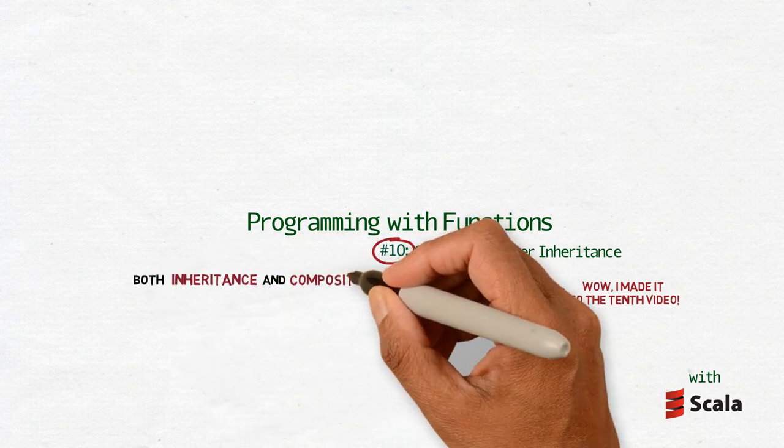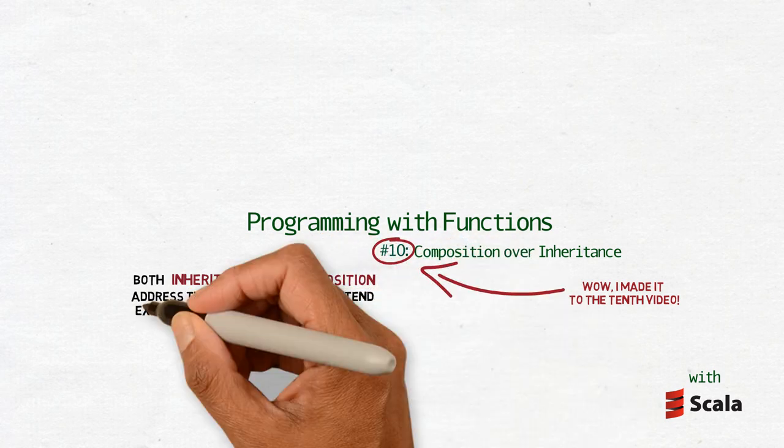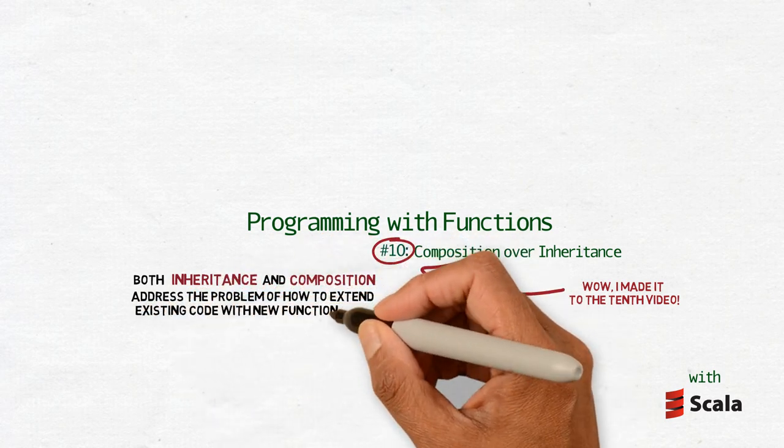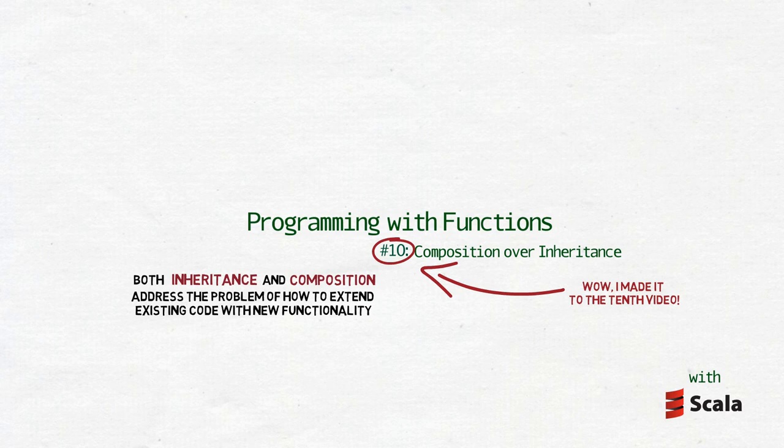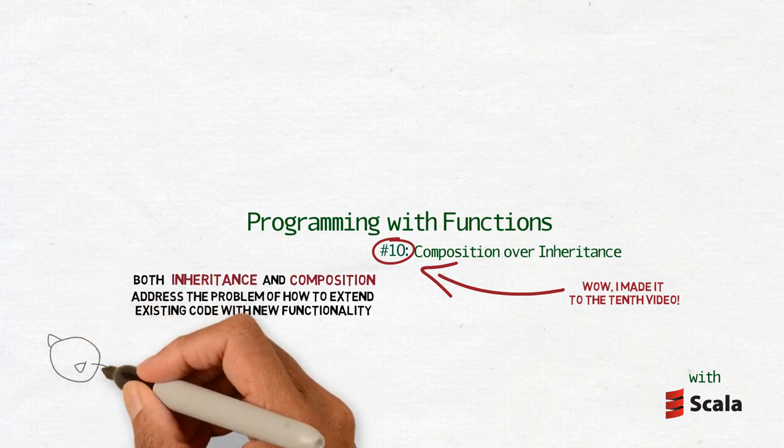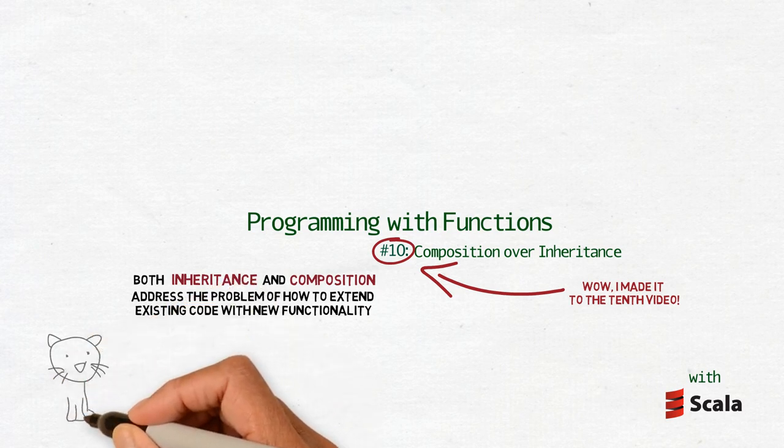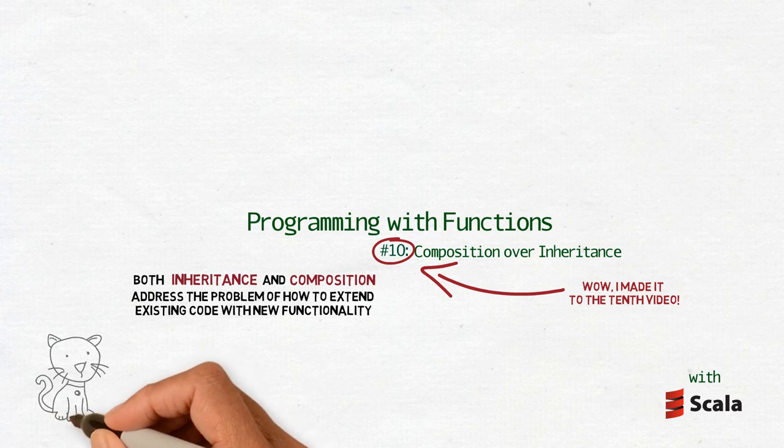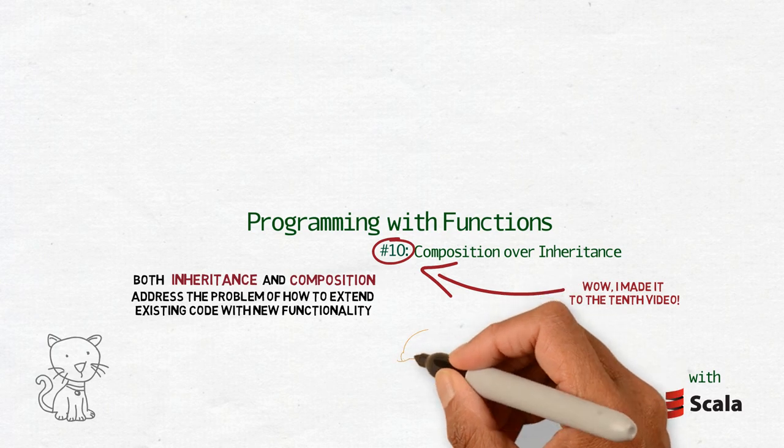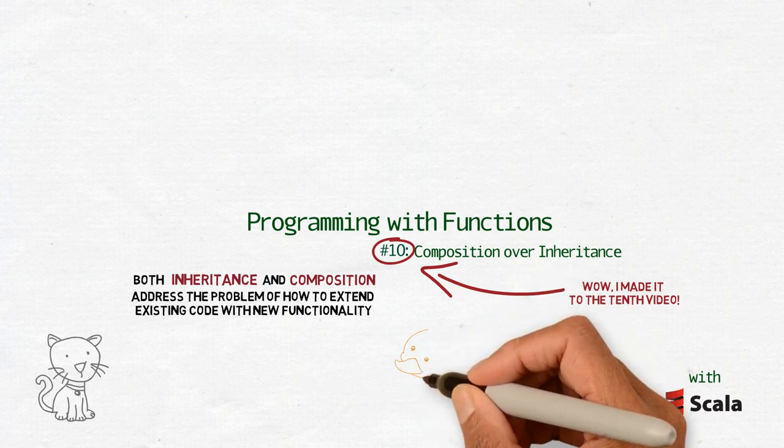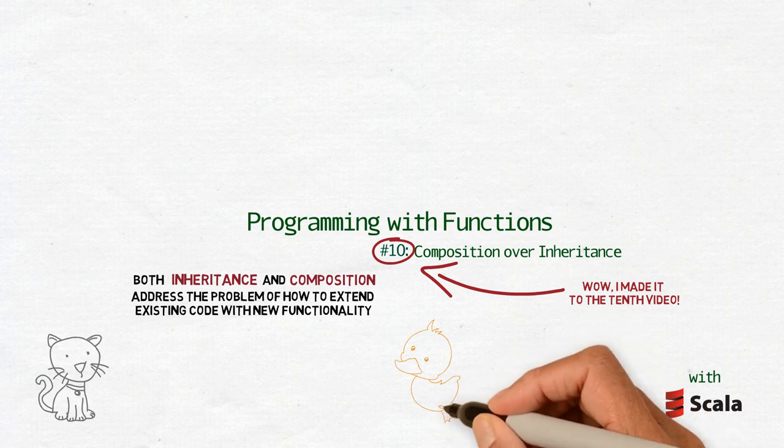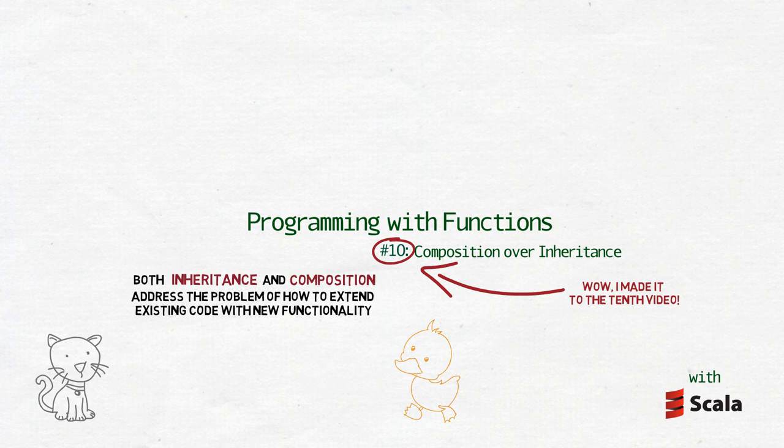Both inheritance and composition address this problem of how to extend existing code with new functionality. We already have some code, possibly from another module, and we want to write something that reuses some parts of that code so that we don't have to repeat ourselves. Or the other way around. We want to write something that can be used by that code, and only under the hood works a bit differently from the original implementation. Or maybe there was never original implementation at all, but only some abstractions that tell us how the implementation should be written so that it can be used by the rest of the code.